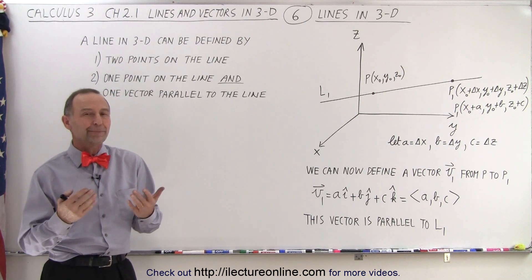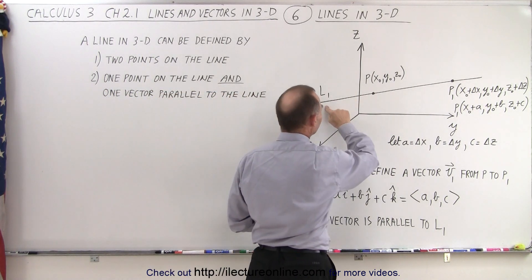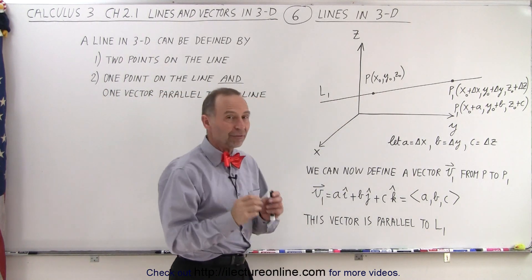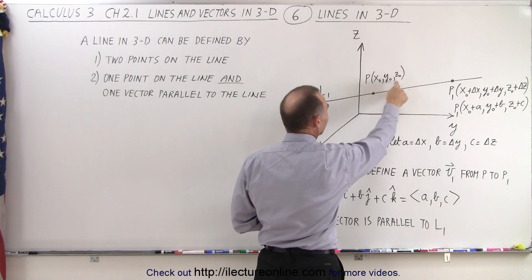How do we define that? So let's say we have a three-dimensional space here, and we have a line, let's call it L1. And let's find a point on the line that has given coordinates x, y, and z.